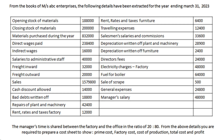In this question, you can see one change in the adjustment. They have given that the manager's time is shared between the factory and the office in the ratio of 20 to 80. This means the manager is spending 20% of his time in the factory and 80% of his time in the office. So, we need to divide the manager's salary as per this 20:80 ratio. They have given the manager's salary as 48,000, and that 48,000 we need to divide in the 20:80 ratio.